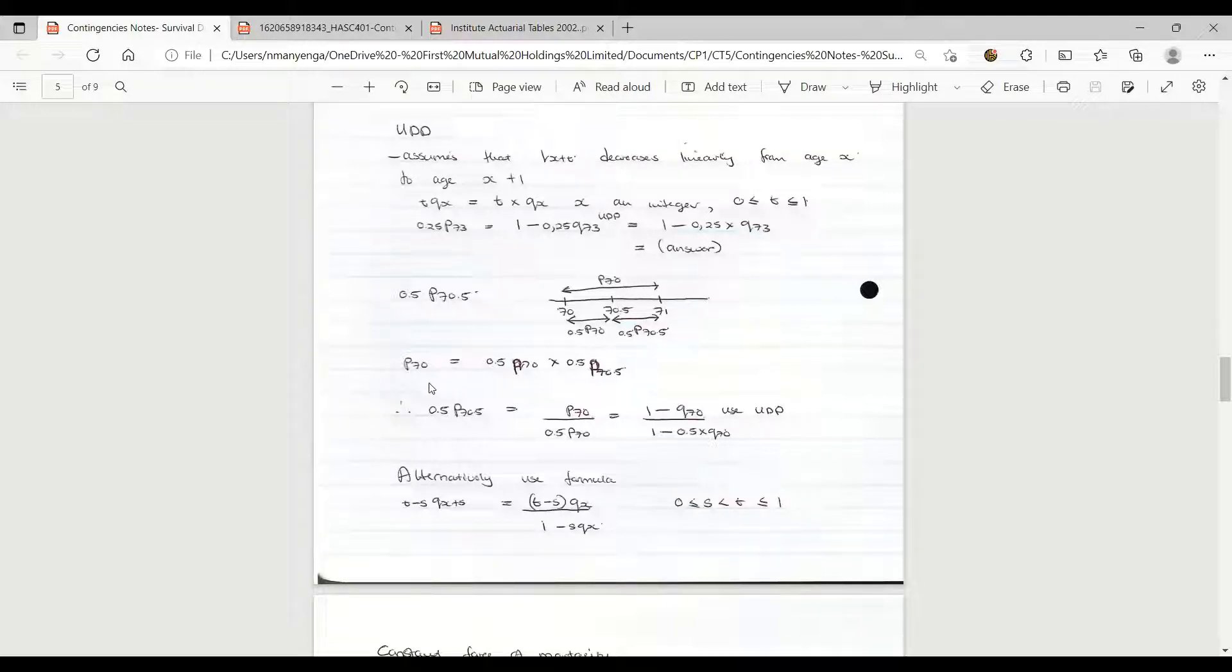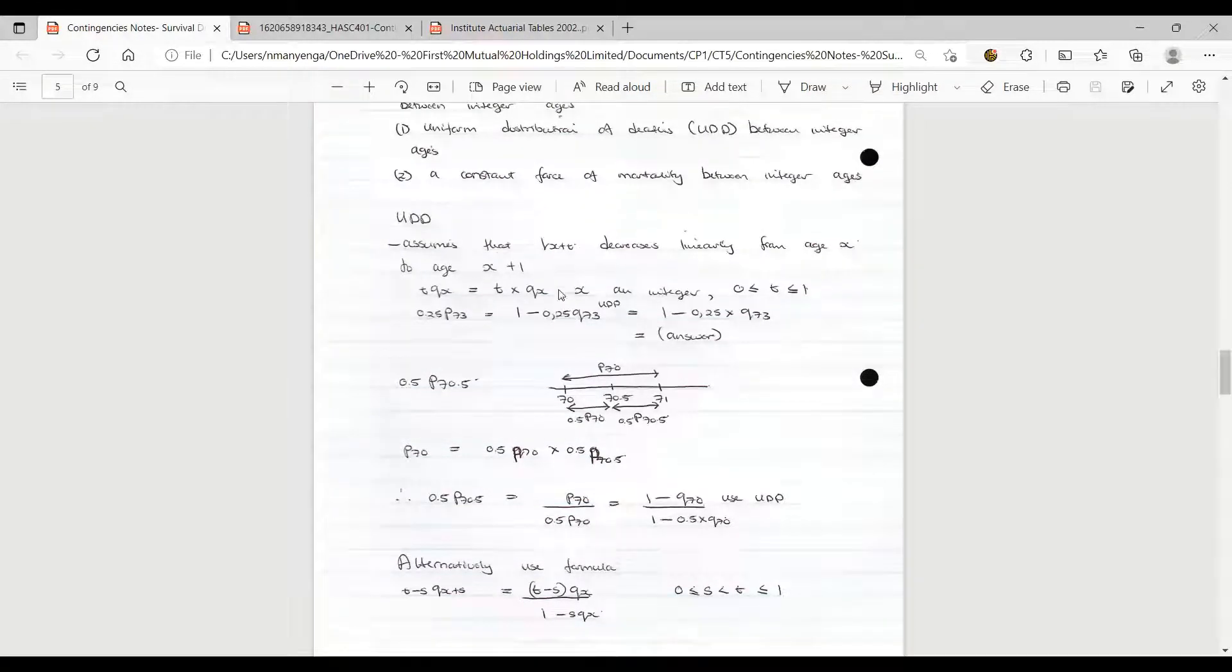The probability from 70 to 71 will be just P70. This is the formula for P70. You'll find that we want to make now this probability with the decimals the subject of the formula using this equation. You'll see that this now evaluates to 0.5 P70.5 equal to P70 over 0.5 P70. Remember that we will be using this formula t times qx if we assume that there is a uniform distribution of deaths between integer ages, that is between ages 70 and 71.